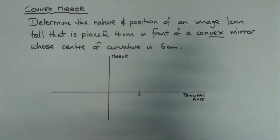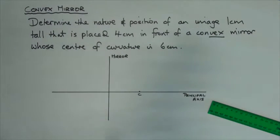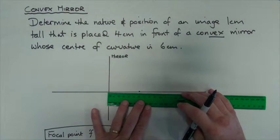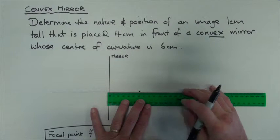So I label C my center of curvature. Now we remember that our focal point is half the center of curvature, or half C. So obviously if it's sitting at six centimeters, the focal point will be three centimeters behind the mirror.